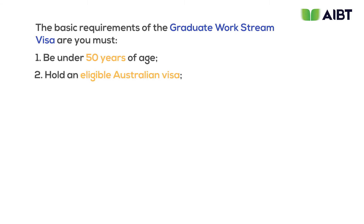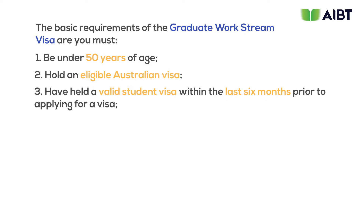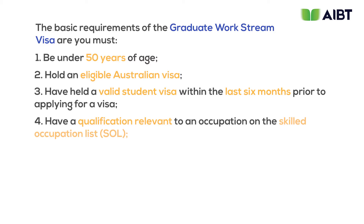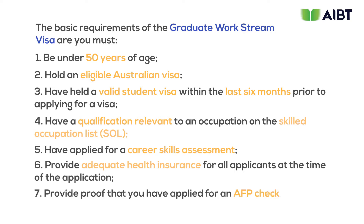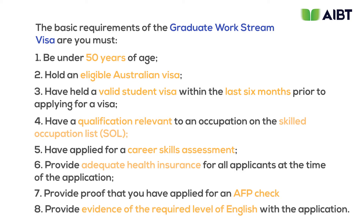You must hold an eligible Australian visa. You must have held a student visa within the last six months prior to applying. You must have a qualification relevant to an occupation on the Skilled Occupations List, or SOL. You must have applied for a career skills assessment — we'll talk about this later. You must provide adequate health insurance for all applicants at the time of application. And you must provide proof that you have applied for an AFP Australian Federal Police check.